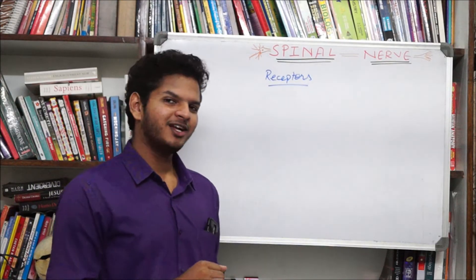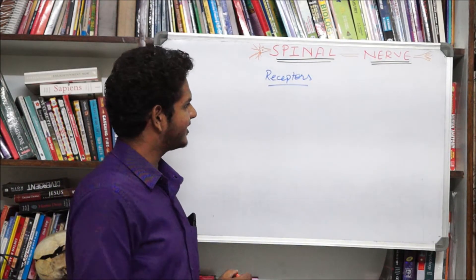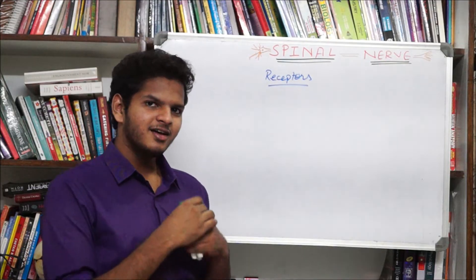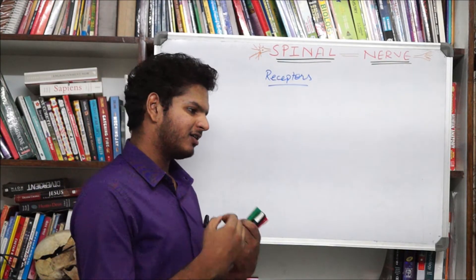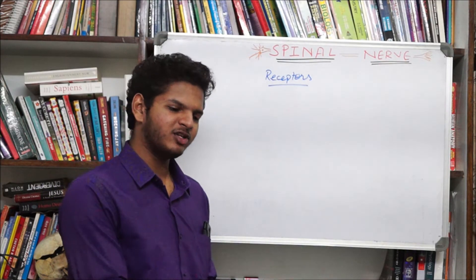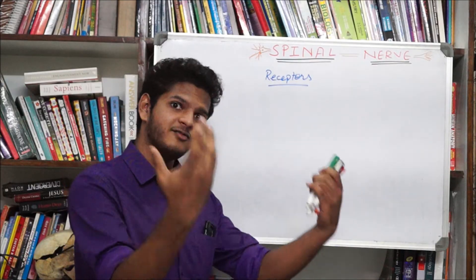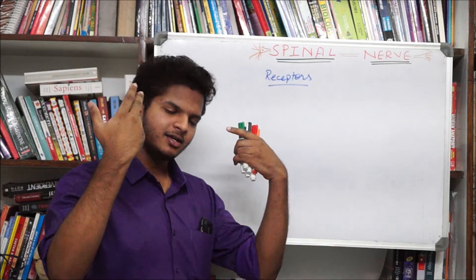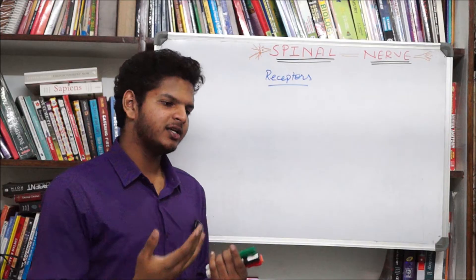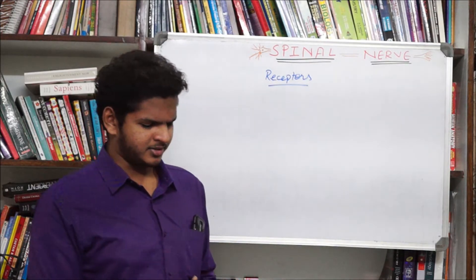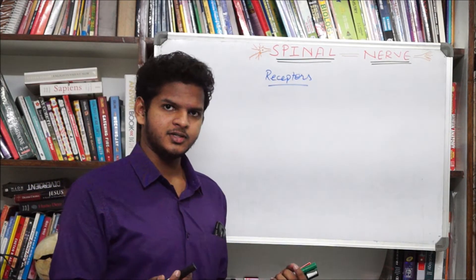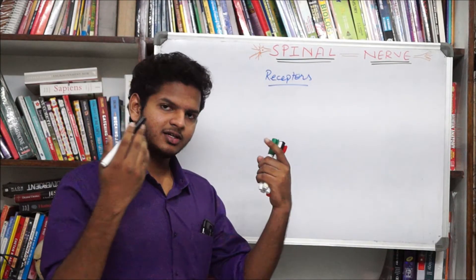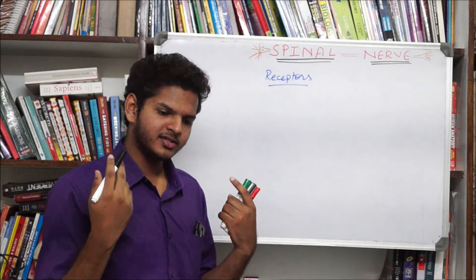The second topic that you need to know before going into the spinal nerves is the thing called receptors. Receptors are basically endings of the nerve fibers which carry the information from the periphery back to the CNS. These are very important as the brain is non-functional without receptors. There are several types of receptors which includes photoreceptors present in your eye.